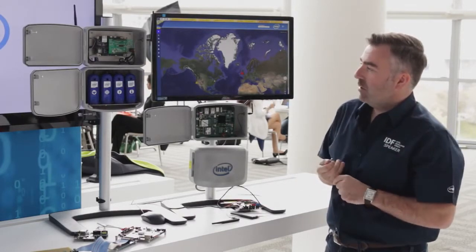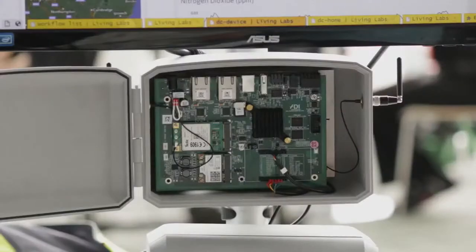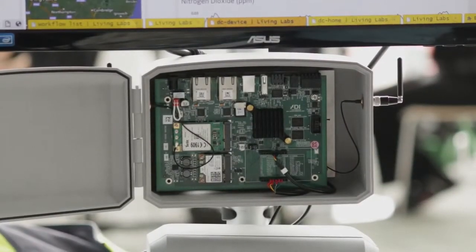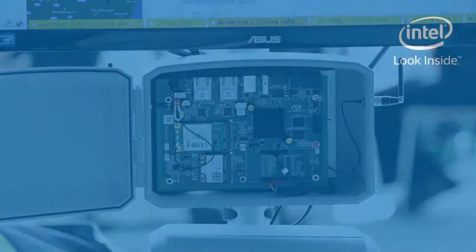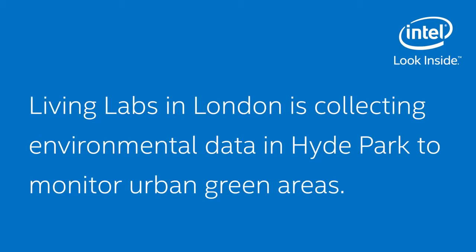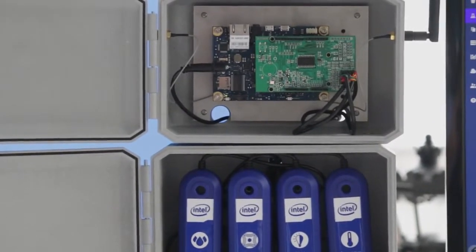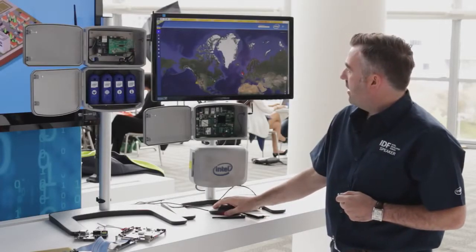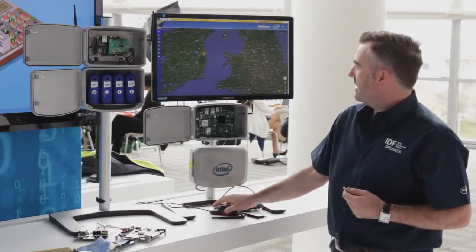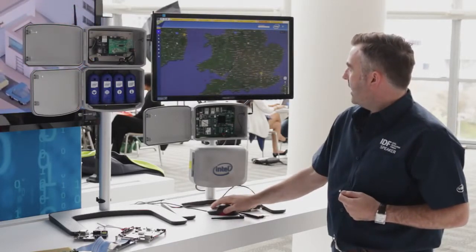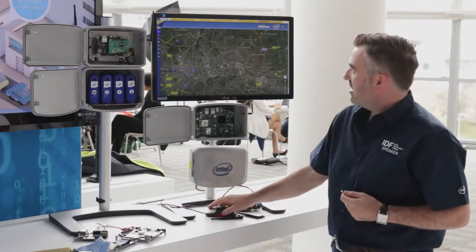The goal of the Living Labs is to rapidly prototype, to conduct research in the wild, and to basically bring our technology into places that it hasn't been before. We have devices that are collecting information live from the field, sending it back where we process it with edge processing and cloud processing — represented on the map here, where we can log in to our Living Labs in London, Dublin, and San Jose.